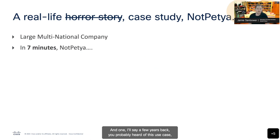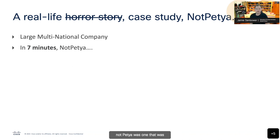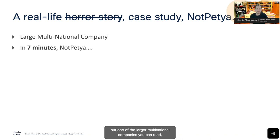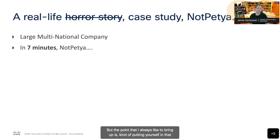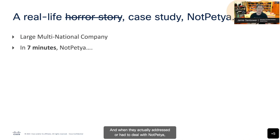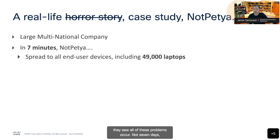A few years back, you probably heard of this use case. When thinking about threats and how they affect organizations, NotPetya was one that was a very challenging threat for many organizations. One of the larger multinational companies you can read about was affected by it. The point I always like to bring up is putting yourself in that security operator or analyst's shoes. When they had to deal with NotPetya, in seven minutes they saw all of these problems occur. Not seven days, seven weeks, or seven months — in seven minutes, 49,000 laptops went down and that NotPetya variant hit all 49,000 laptops.